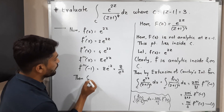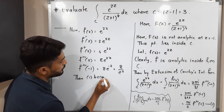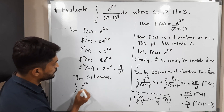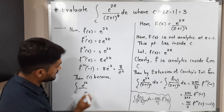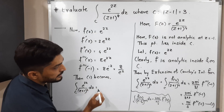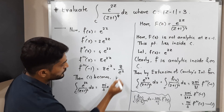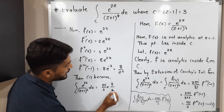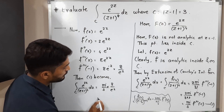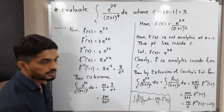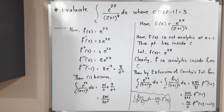Substituting back into equation (1), the integration over C of e^(2z) / (z+1)^4 dz equals πi/3 times 8/e², which gives 8πi / (3e²). This is the required answer.